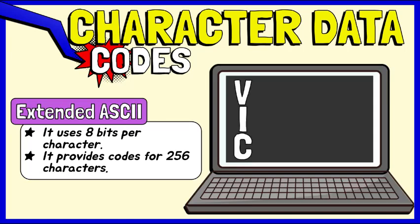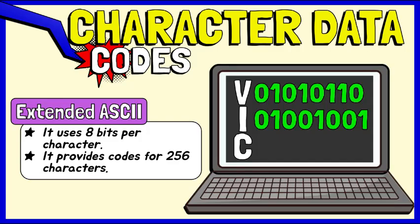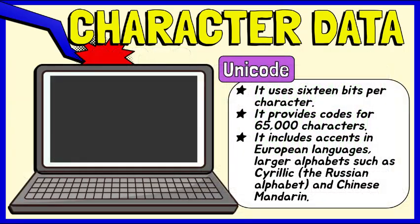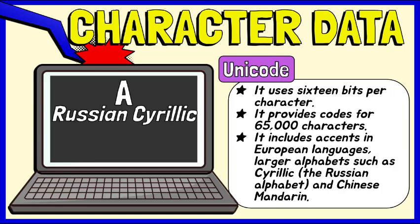For example, this is how a computer can use 0s and 1s to represent the letters in the name VIC. If you want to use accents in European languages or larger alphabets such as the Russian alphabet Cyrillic and Chinese Mandarin, then more characters are needed. Unicode was created for this. Unicode uses 16 bits and provides codes for 65,000 characters. For example, Unicode represents an uppercase A in the Russian Cyrillic alphabet with a set of 0s and 1s.